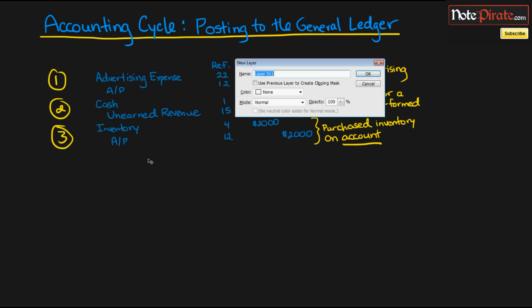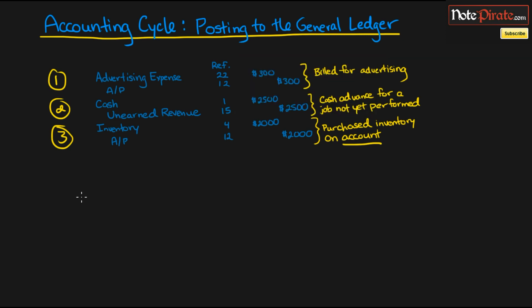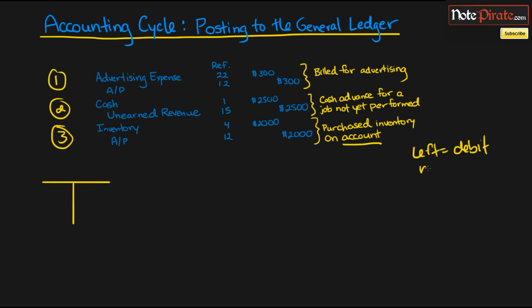Let's go about posting some of these entries to their T-accounts. The reason they're called T-accounts is because they physically look like the letter T. The left side is reserved for debit entries and the right side is for credits. You just have to get used to left always being associated with debits and right always being associated with credits.